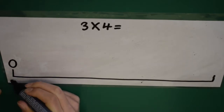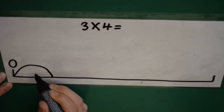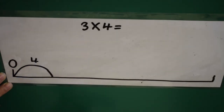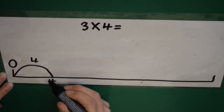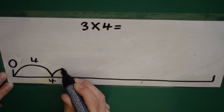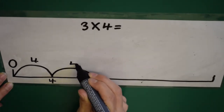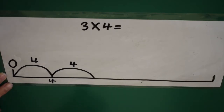So, we can do one lots of four, can't we? And what's one lots of four? Four. Now, we can do two lots of four, which is another four. So, what's two lots of four? Eight.